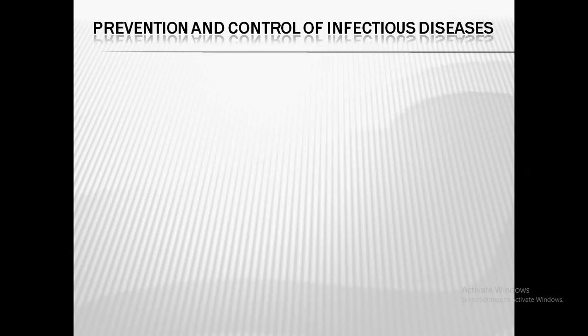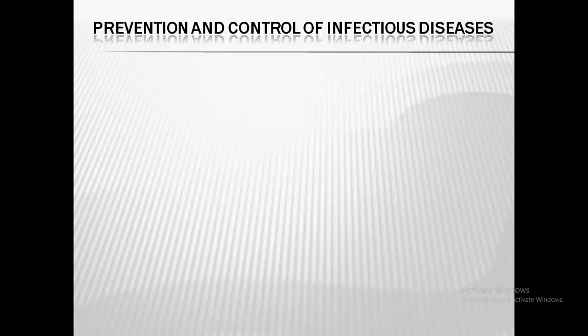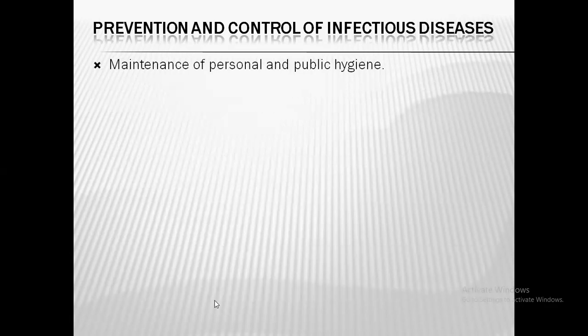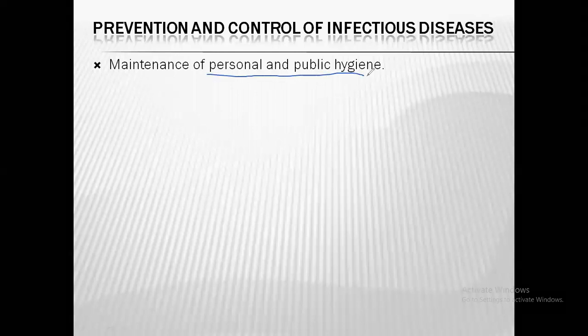Today we will discuss a very important topic: prevention and control of infectious diseases. When we talk about infectious disease, we understand that the causative organism needs to grow, proliferate, and transmit in a preferable environment. The basic approach is to avoid those conditions which allow the proliferation of pathogenic organisms or their vectors. The first thing to maintain is personal and public hygiene.